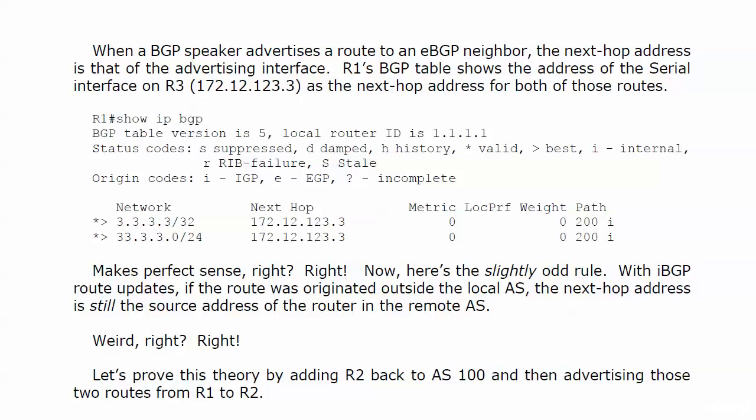Now that makes perfect sense, but here's the slightly odd rule. With IBGP route updates, if the route was originated outside the local AS, the next-hop address is still the source address of the router in the remote AS. Weird? Yes. But it's true, and that's why the internal versus external distinction really has a huge impact on how routes are advertised and whether certain routes are even considered for BGP.